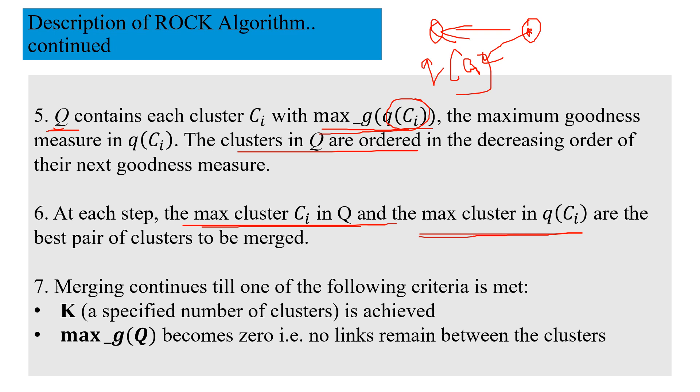This merging continues till one of the criteria is met: either we get K, or no more links remain between the clusters. That means you are unable to merge any more clusters. This was just briefly the ROCK algorithm.